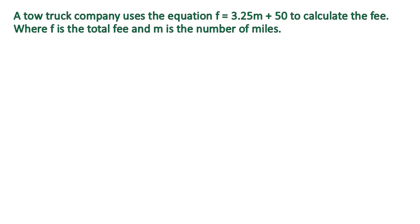A tow truck company uses the equation f equals 3.25m plus 50 to calculate the fee, where f is the total fee and m is the number of miles. So you'll notice that in this equation, you have a couple of pieces of information. f equals 3.25m plus 50, and that is in the slope-intercept form. It's just not y equals mx plus b, it's f equals 3.25m plus 50.